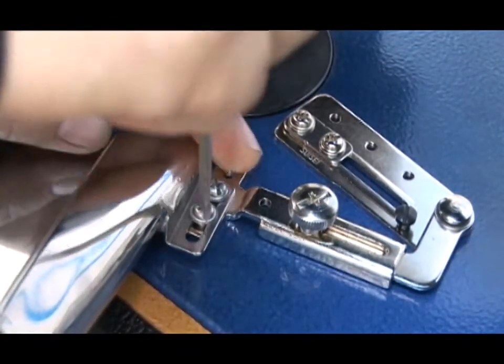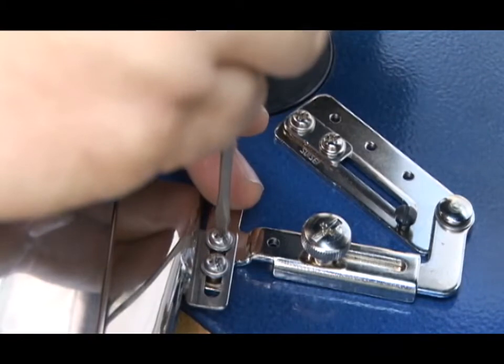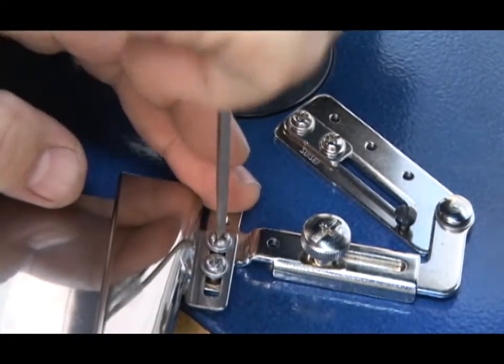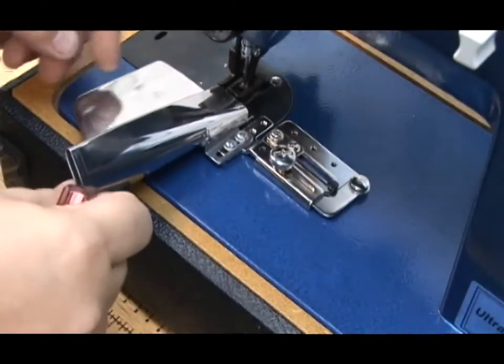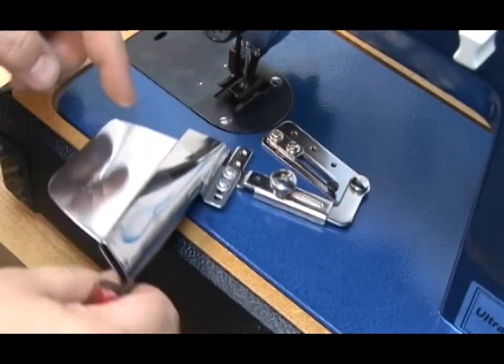That is all there is to it. Make sure the binder is also straight according to the foot on your sewing machine. If it is a little bit cocked, you can always loosen the screws and cock it one direction to get it straight. There we go. Looks good.